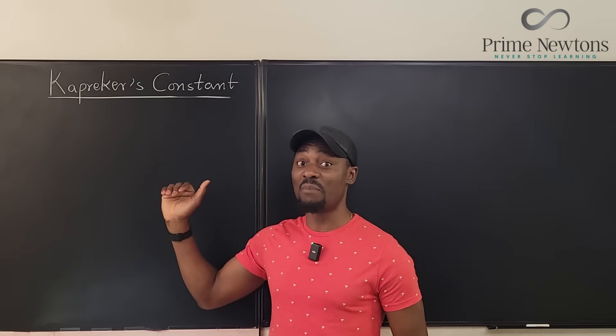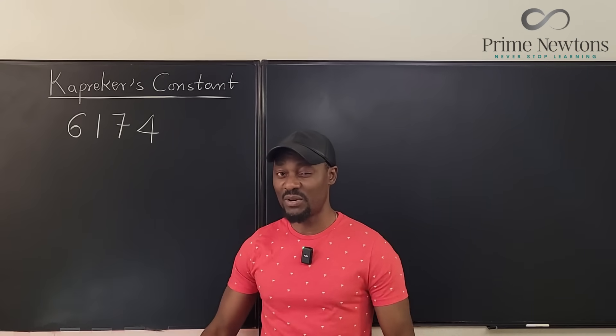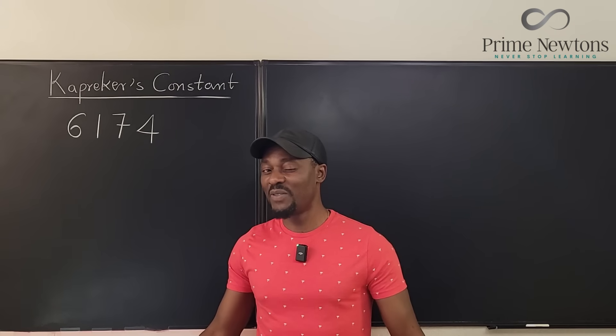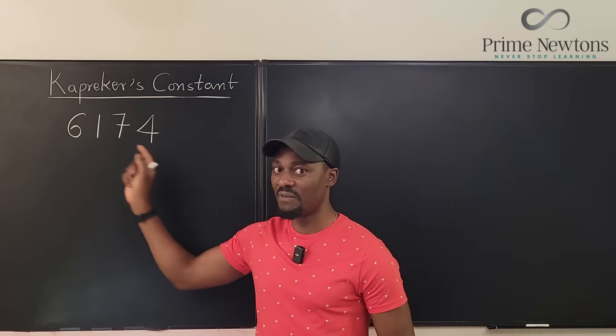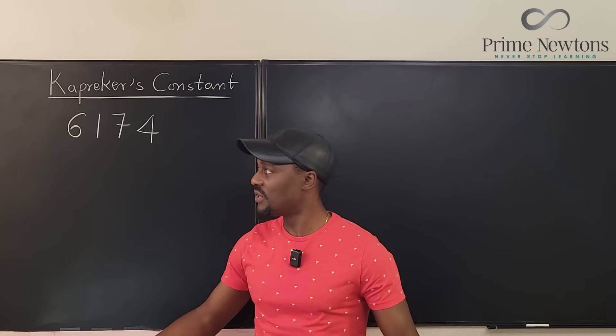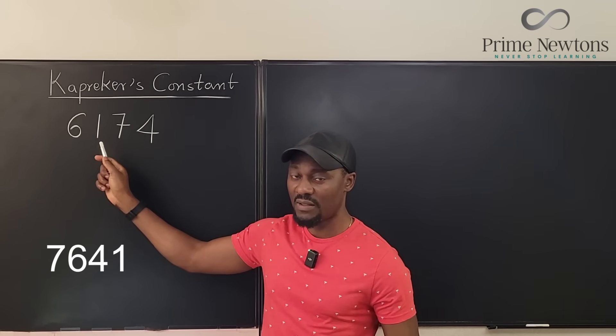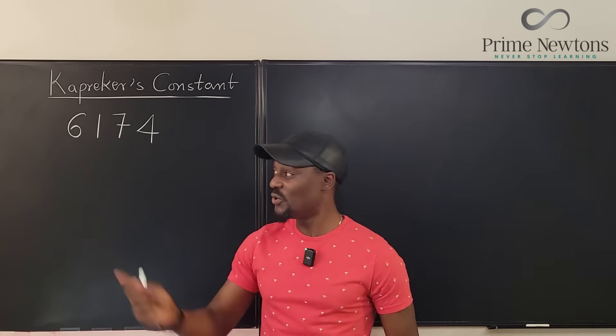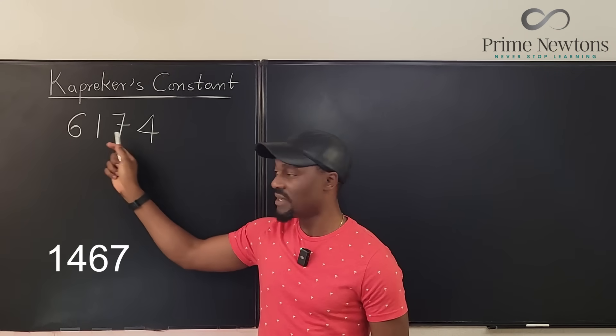And what is Kaprekar's Constant? 6,174 is Kaprekar's Constant. And you're going to ask me, what's special about this number? Well, let's begin. If you try to rearrange the digits of this number so that you form the biggest possible number, what are you going to get? You're going to get 7,641. That's the biggest number you can get.